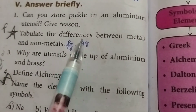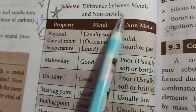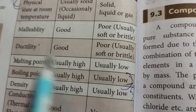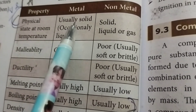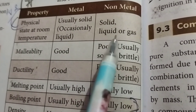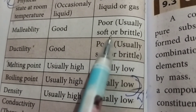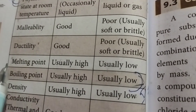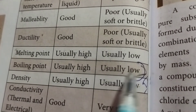Second question: tabulate the differences between metals and non-metals. From page 98 - Property | Metal | Non-metal. Physical state at room temperature: usually solid, occasionally liquid | solid, liquid or gas. Malleability: good | poor, usually soft or brittle. Ductility: good | poor, usually soft or brittle. Melting point: usually high | usually low. Boiling point: usually high | usually low.